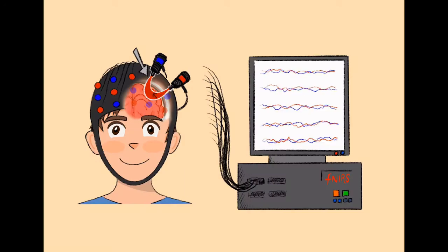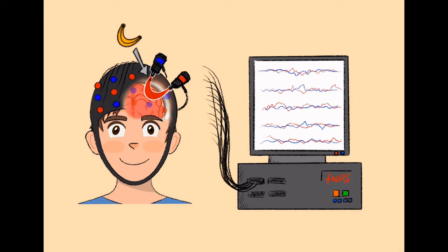Once the measurement starts, the red sensors shine red light onto your head. This light then travels in a banana-like shape through your skin and your skull until it reaches the outer layer of your brain.